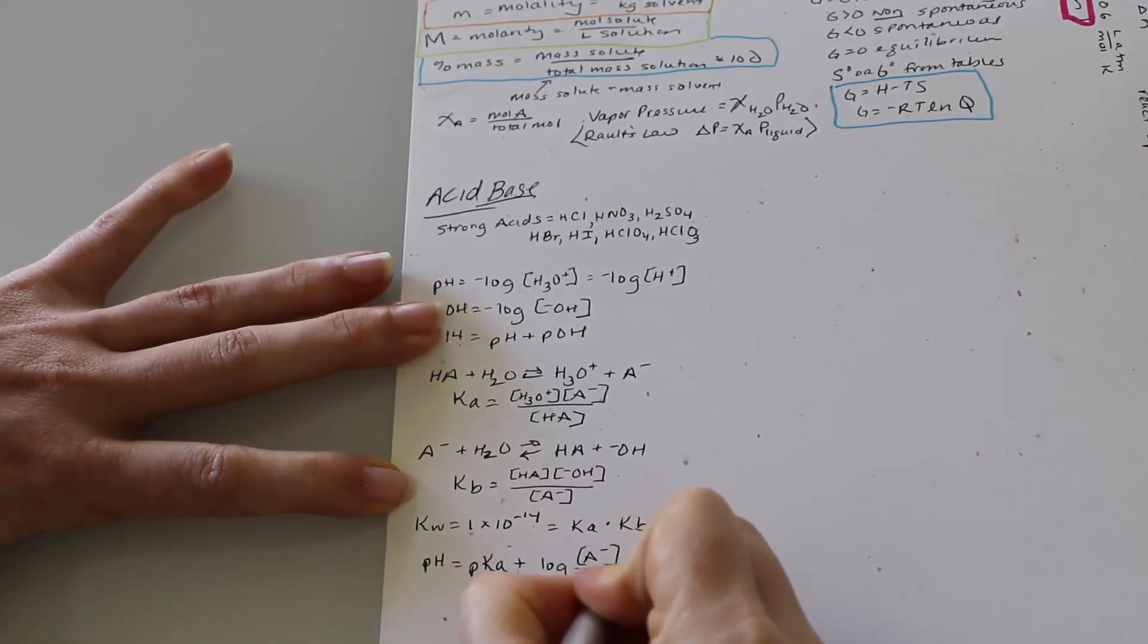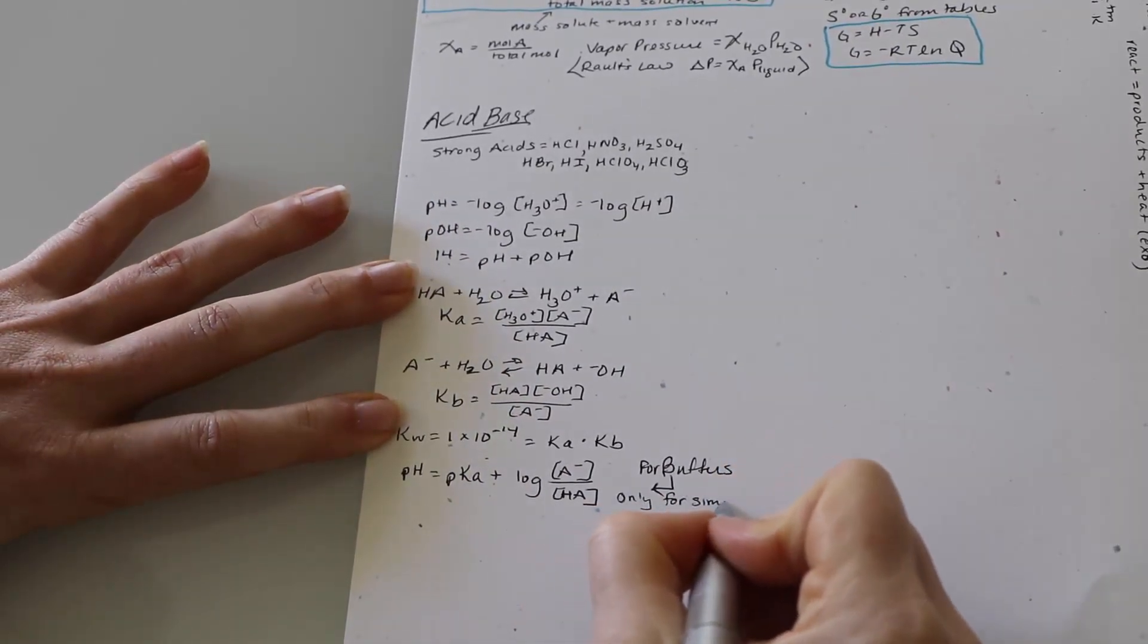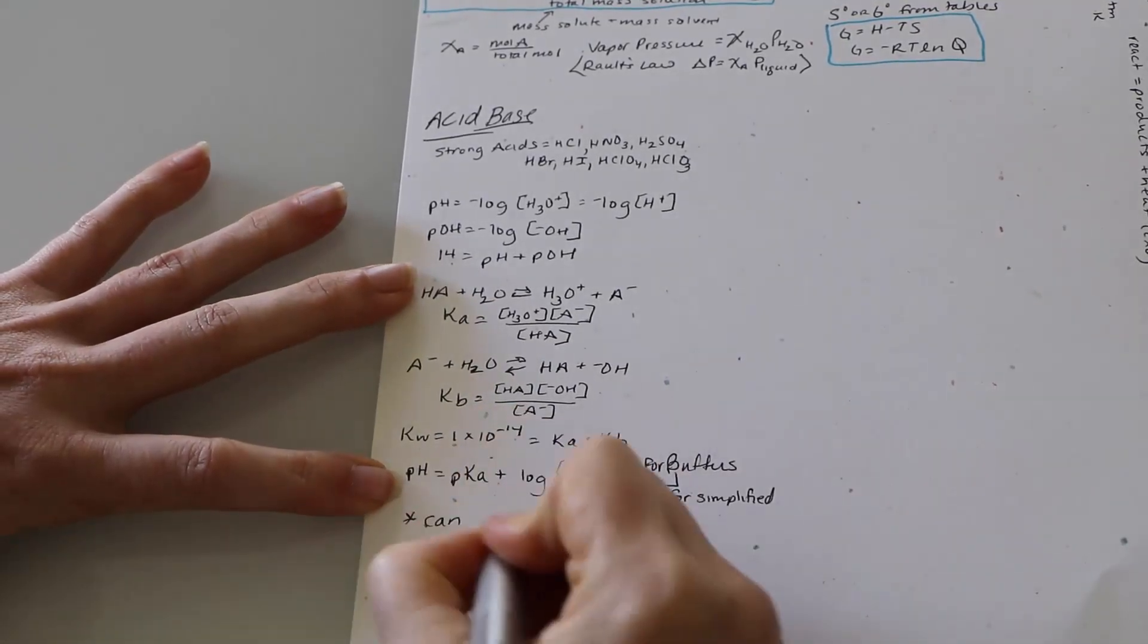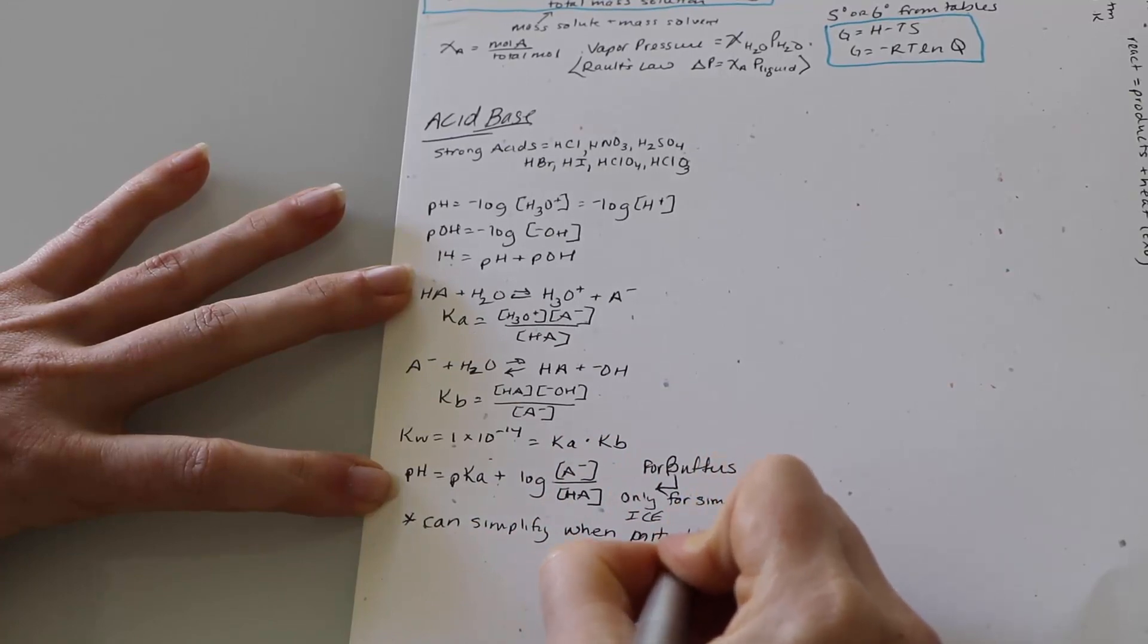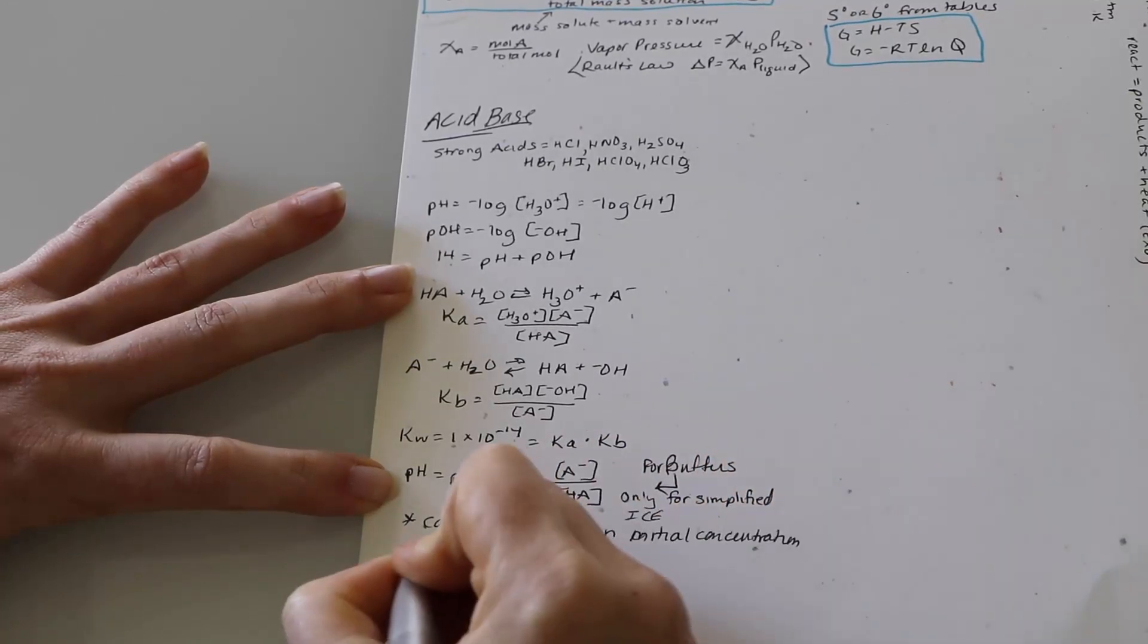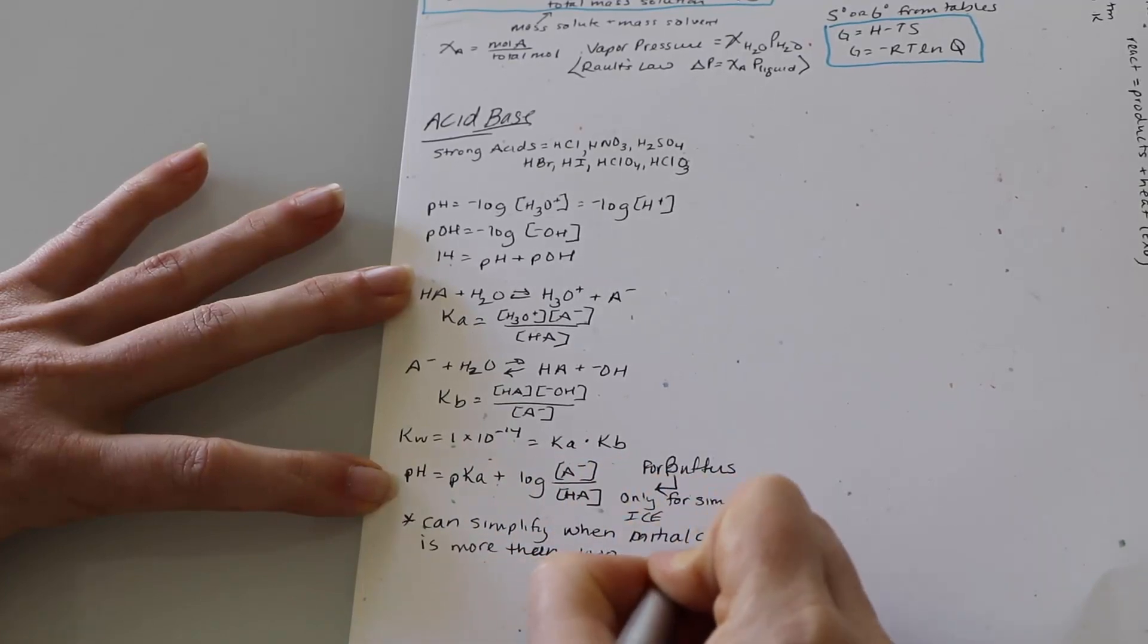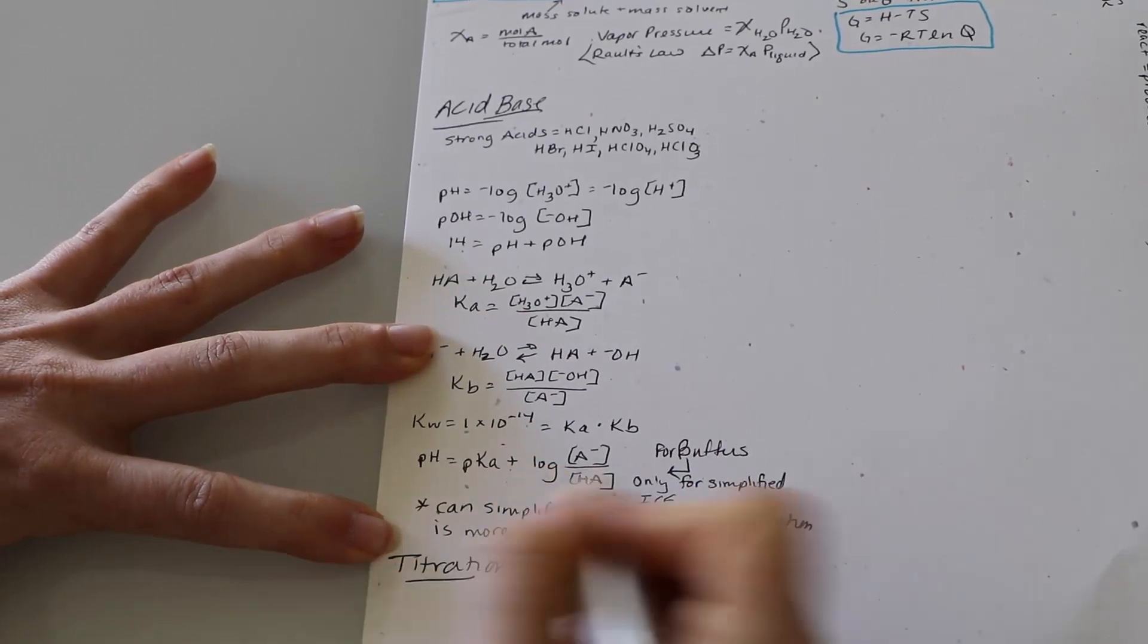Now for buffers, the Henderson-Hasselbalch equation, pH equals pKA plus the log of the acetate over the weak acid. And that's only for simplified ice situations. You are allowed to simplify when the initial concentration is more than a thousand times different than your K value. If you're less than a thousand times different, you may not simplify.